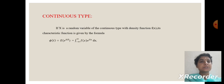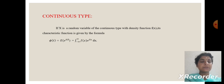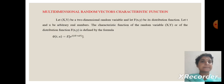Continuous case: if x is the random variable of the continuous type with the density function f of x, then pi of t equal to expectation of e power i tx equal to the integral from minus infinity to plus infinity of f of x times e power i tx dx.